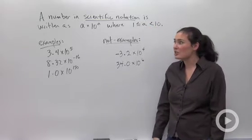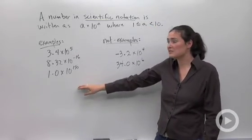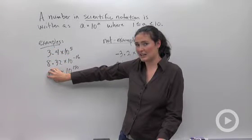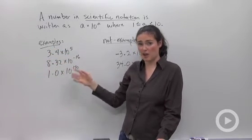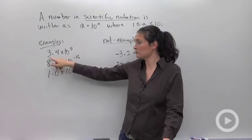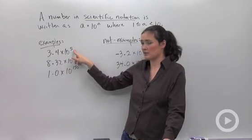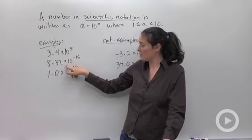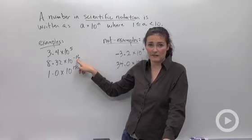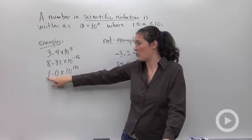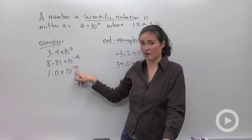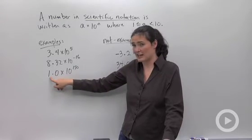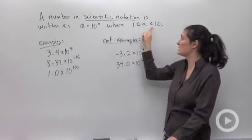So here we go. When you're looking at examples of these problems, make sure this a quantity is less than 10, and make sure it's times the number 10 to some exponent. Less than 10, times 10 to the fifth, good. Less than 10 but greater than or equal to 1, times 10 to a negative exponent, that's okay. And here we have 1.0 times 10 to the 150th. Big old exponent, that's okay. Just make sure that your a value works in this inequality.